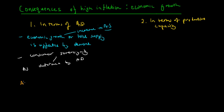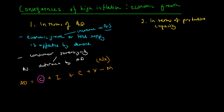Aggregate demand is composed of consumption expenditure, investment expenditure, government expenditure, and exports minus imports — or net exports. What happens to consumption when we have high inflation? When inflation increases, consumption decreases, because we can consume less of the same basket of goods and services with the same income. So consumption decreases.